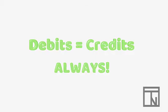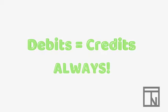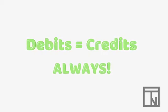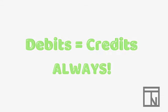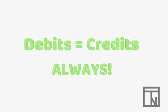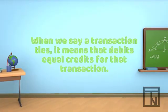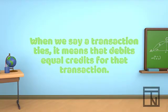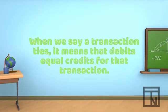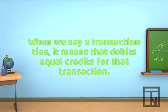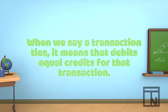One other thing to note about debits and credits is that total debits always equal total credits. This is true for the entire accounting equation, and also for each individual transaction. This is just another way we can check to make sure the transactions are recorded correctly. When total debits and total credits are compared and they do balance, we say that they tie. Tying debits and credits is a common accounting practice that ensures the accuracy of the accounting records.